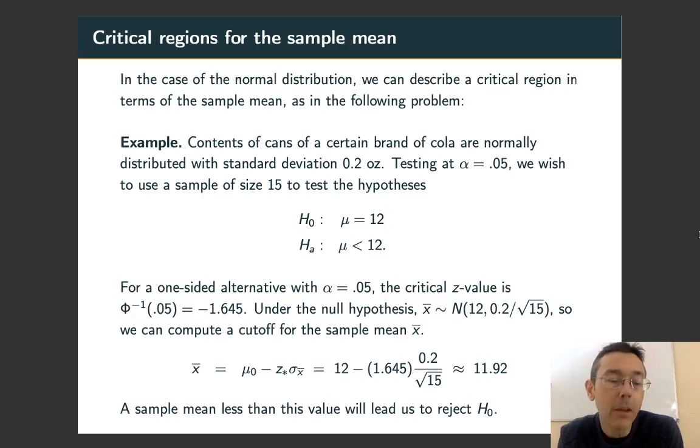So if you get a sample mean of less than 11.92 ounces, then you're going to reject the null hypothesis.